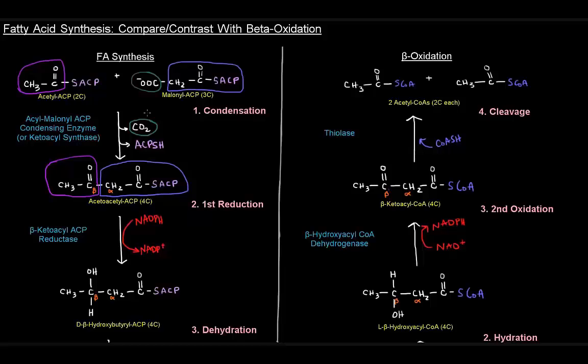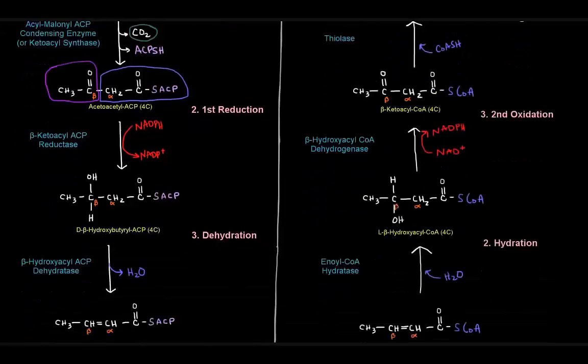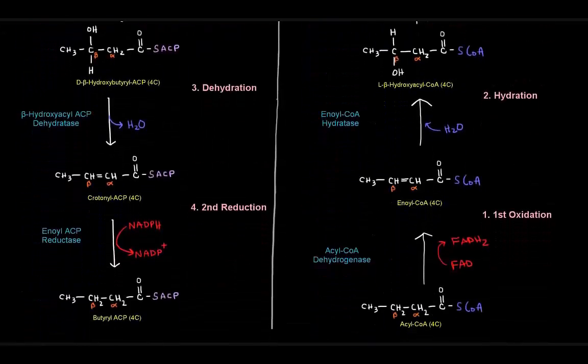Notice, for instance, the result of fatty acid synthesis is we have an acyl-ACP, whereas in beta-oxidation, we start with an acyl-CoA. So the difference really in terms of the structures is just right here. It's still a thioester linkage, just to a different thing.